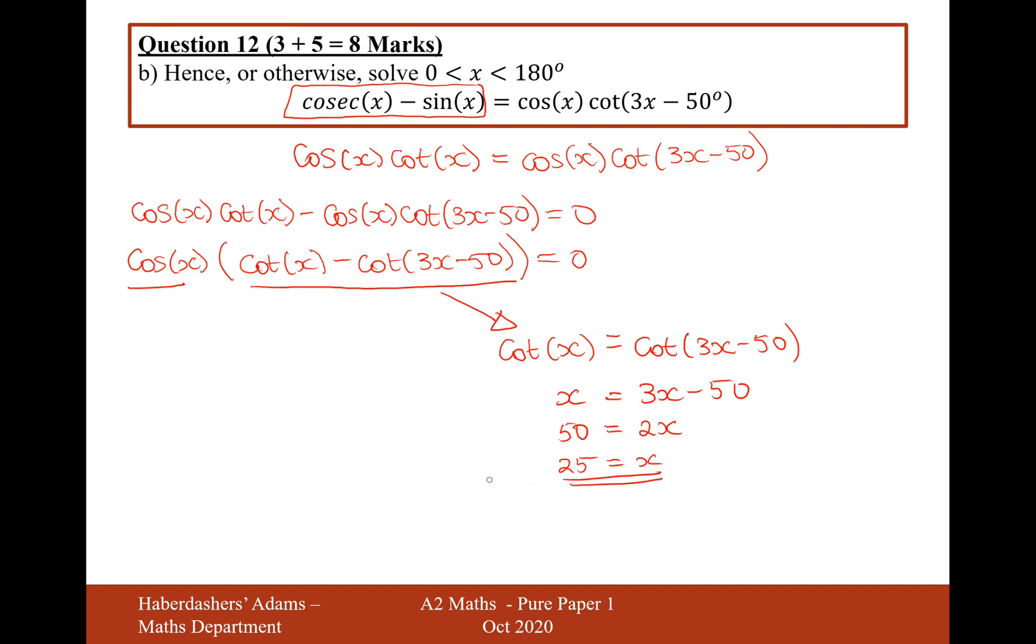But the thing about the cot graph is that it repeats itself every 180 degrees, just like the tan graph does. So actually what we could say as well is that x plus 180 equals 3x minus 50 will also be a solution. So if we now rearrange this a little bit, if we add the 50 onto this side, it'll be 230 equals 2x. And then if we divide by 2, we're going to get 115 equals x.